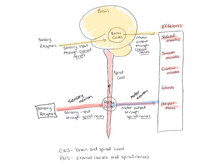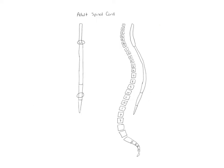Probably the biggest part of this chapter is reflexes. A reflex is where, under unconscious control, sensory information comes into the spinal cord and a motor command goes right out again. There will be a synapse or multiple synapses in the spinal cord. That's probably half of this chapter — going over the different types of reflexes. This is an adult spinal cord, and I want to go over the spinal cord and how it relates to the spine.